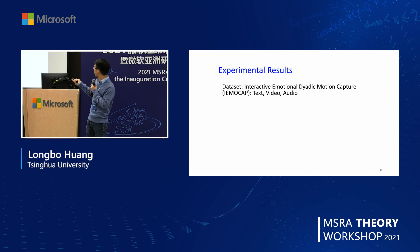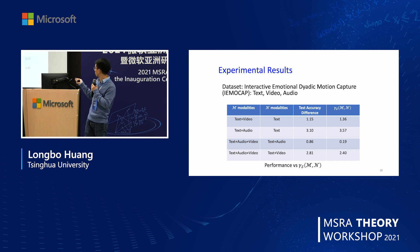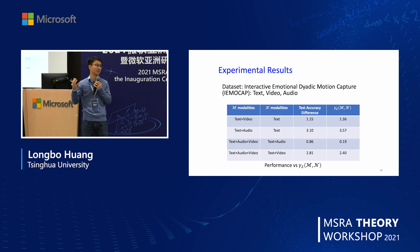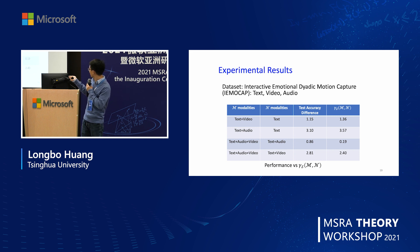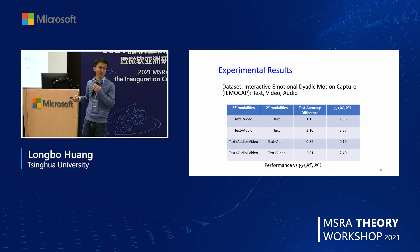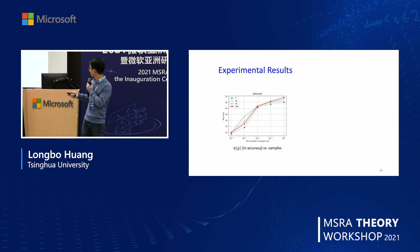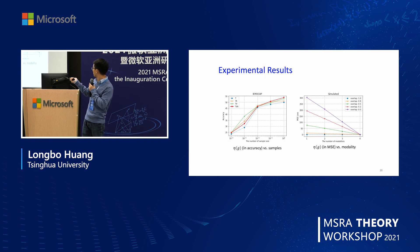For empirical results, we use a dataset with three modalities — text, video, and audio — and evaluate test accuracy differences while also computing our gamma(M,m) value. We see that using more modalities gives higher test accuracy, and the gamma value is positive in all cases, consistent with our theory. Additional plots show the latent representation quality versus sample size following order 1/sqrt(n), and representation quality improving with more modalities.